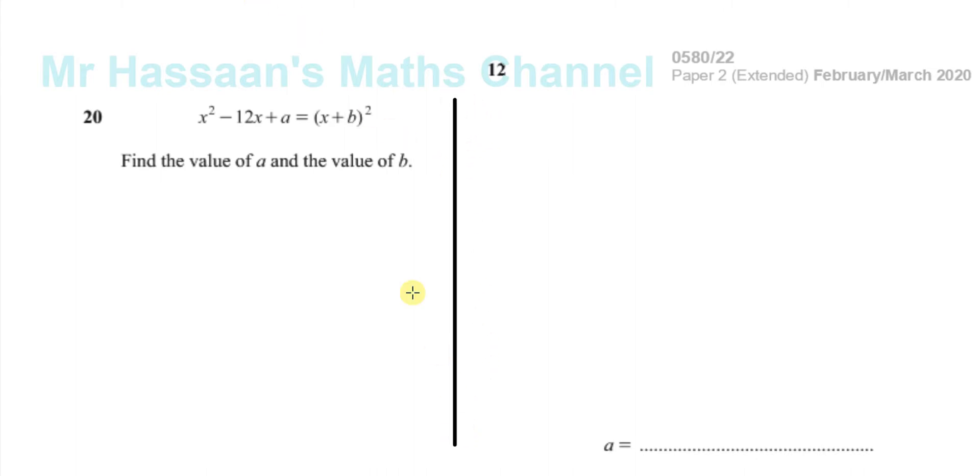One of the ways of doing it is by comparing what this looks like when it's expanded with what this is. So I'm going to take x plus b and I'm going to square it.